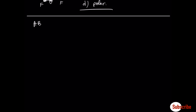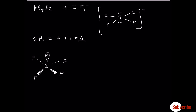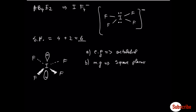The final example is AB4E2. A typical example is iodine tetrafluoride. The steric number is 4 sigma bonds plus 2 lone pairs, equal to 6. According to VSEPR theory, this anion has an electronic geometry of octahedral, but the molecular geometry is square planar. The angles are 90 degrees, and the molecule is nonpolar. That's it for this video — if you find it helpful, give it a thumbs up. See you in the next video.